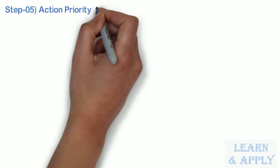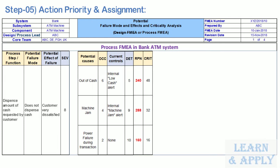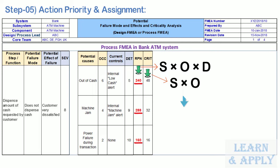Step 5: Action Priority and Assignments. Calculate the Risk Priority Number (RPN), which equals Severity × Occurrence × Detection (S × O × D). In our example, the RPN values are 240, 288, and 160 respectively for each potential cause. Also calculate criticality by multiplying Severity by Occurrence (S × O). These numbers provide guidance for ranking potential failures in the order they should be addressed. In our example, criticality values are 48, 32, and 16 respectively.